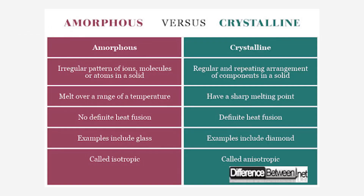Here's a summary comparing amorphous versus crystalline polymers: crystalline has regular repeating patterns, while amorphous does not. Amorphous polymers are isotropic, while crystalline polymers are anisotropic.